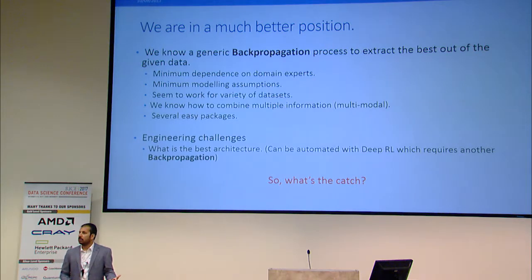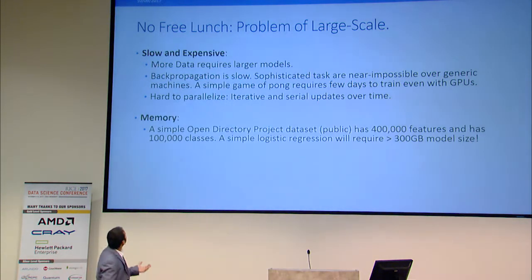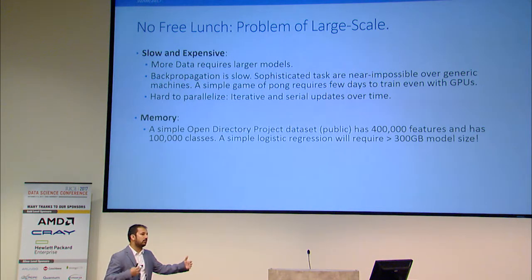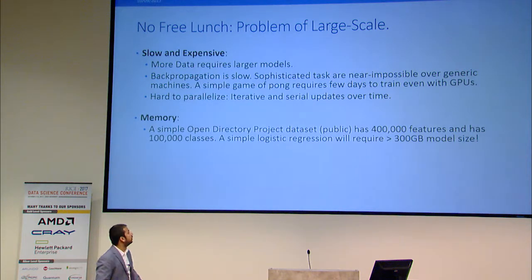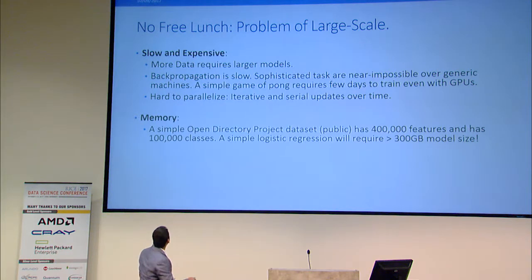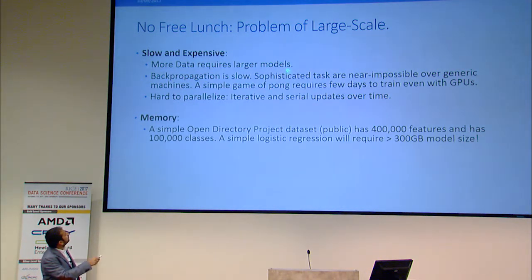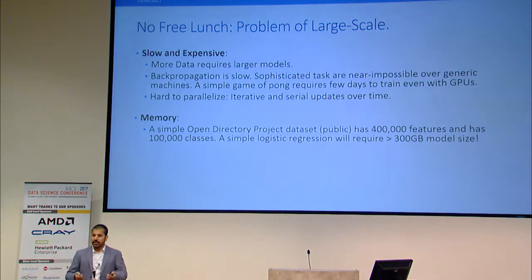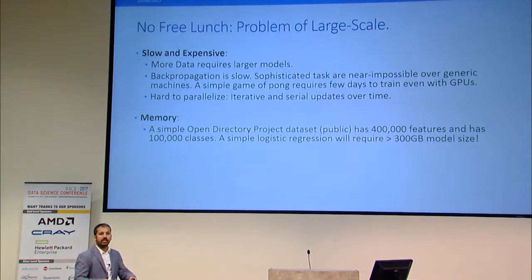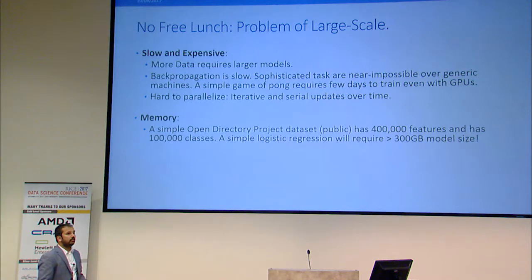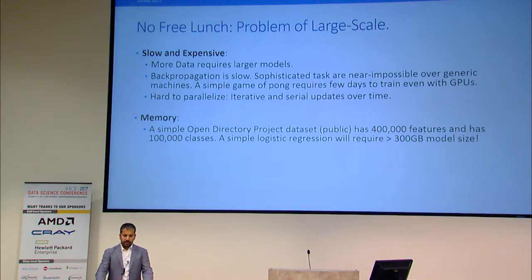So where is the catch? It's in computations — there is no free lunch. We can get lots of data, we need lots of model, and bigger is better. We are hitting the limits of computation. Backpropagation is actually very slow. Try learning a game of Pong using deep reinforcement learning — you will need GPUs, and it's a simple network but will still take days to train. Working with ImageNet takes around a week to get state-of-the-art accuracy with one GPU. Backpropagation is also hard to parallelize because the iterates are serial: observe data, update parameters, observe more data, update again.